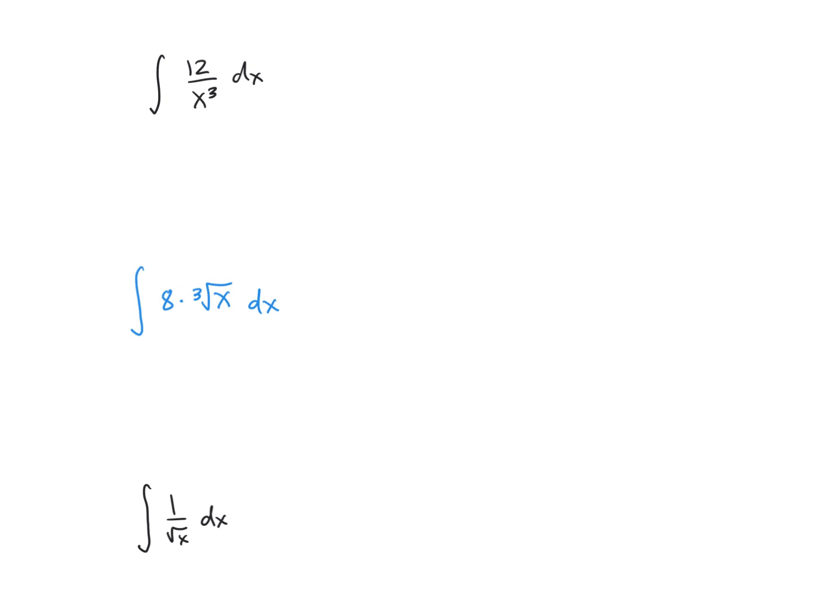So for this first problem, we're going to rewrite this as the integral of 12 times x to the negative 3 power. And then we're going to apply the power rule. The power rule says that we're going to take the exponent on x, and we're going to add 1 to that power to get the brand new power, and then divide by that same brand new power.